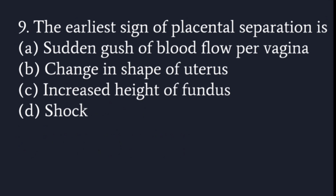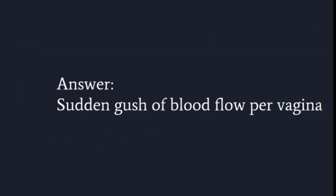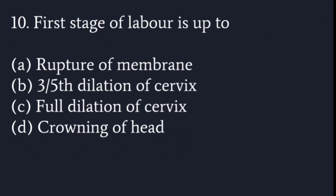The earliest sign of placental separation is: sudden gush of blood flow per vagina, change in shape of the uterus, increase in height of fundus, or shock? The answer is sudden gush of blood flow per vagina, along with apparent lengthening of the cord.